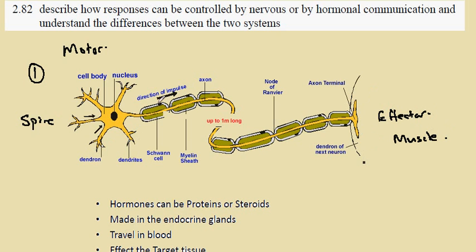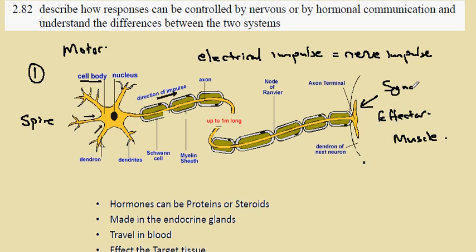The impulse, the electrical impulse or nerve impulse, is carried along inside the nerve down this orange structure. From the cell body to this structure here, which is known as the synaptic knob, where it connects to the muscle.